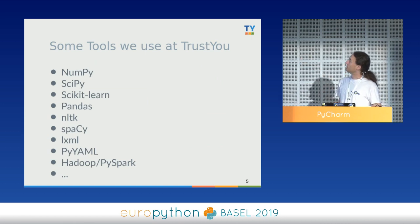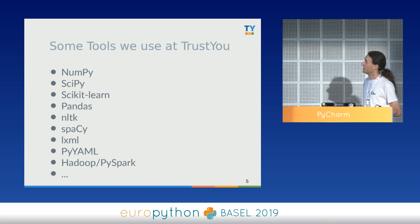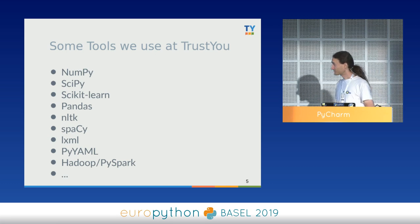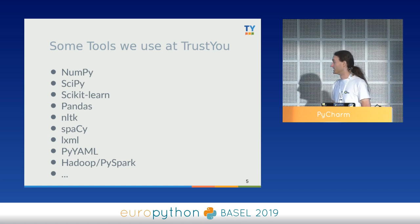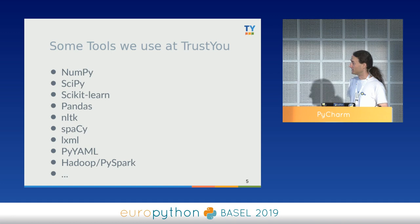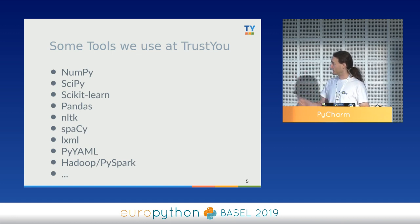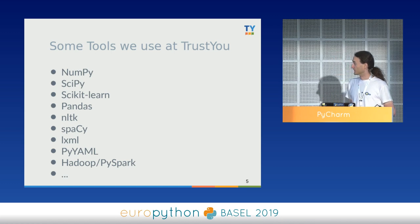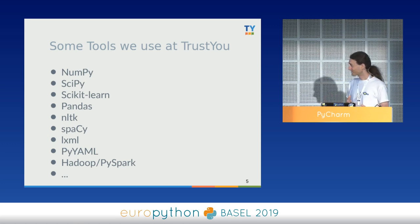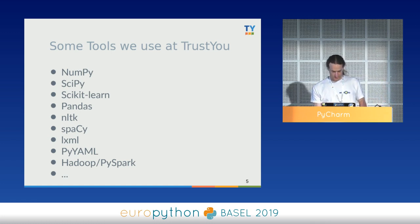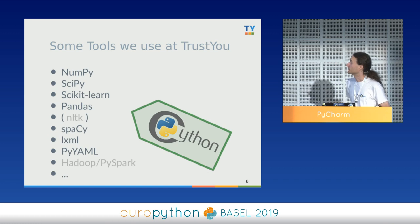These are some tools we use at TrustU. We're a data company, so we use NumPy, SciPy, scikit-learn, pandas for data analysis, NLTK and spaCy for text analysis, LXML for XML, PyYAML for configuration, and it's all based on Hadoop processing in Spark — some MapReduce, Hive, and all these technologies. Most of these tools are actually partly or entirely written in Cython.